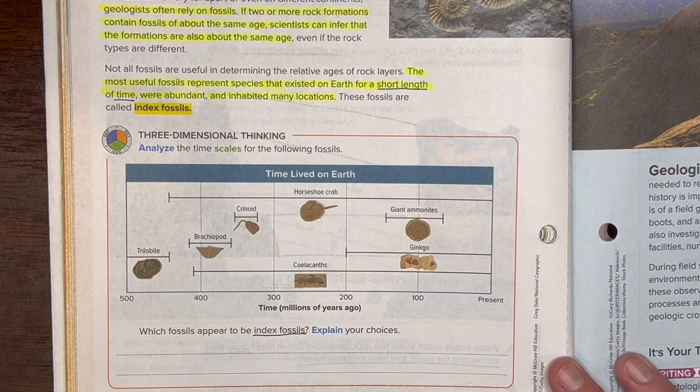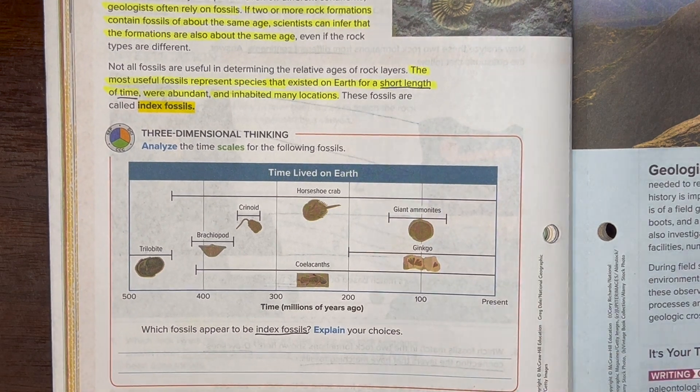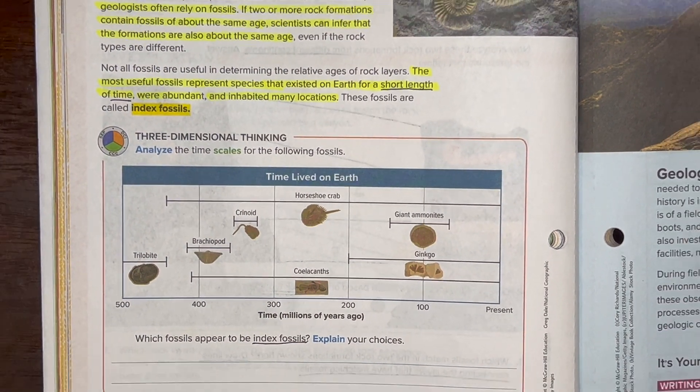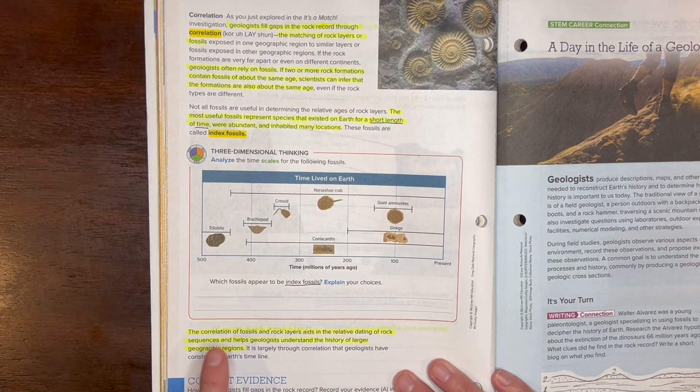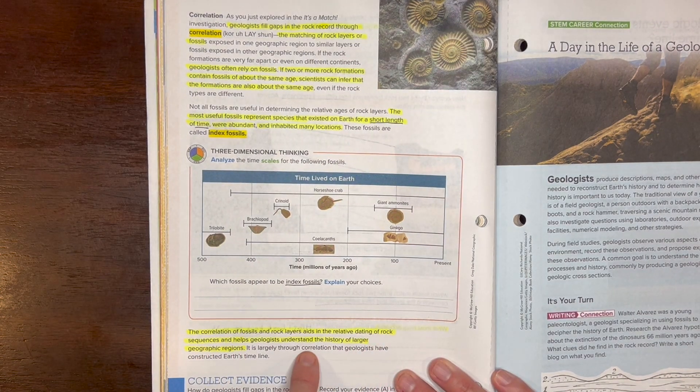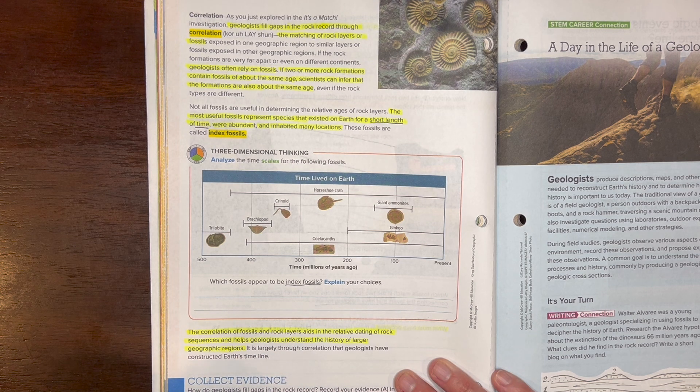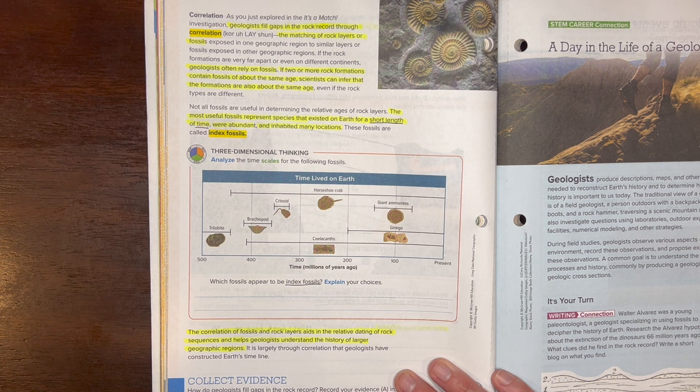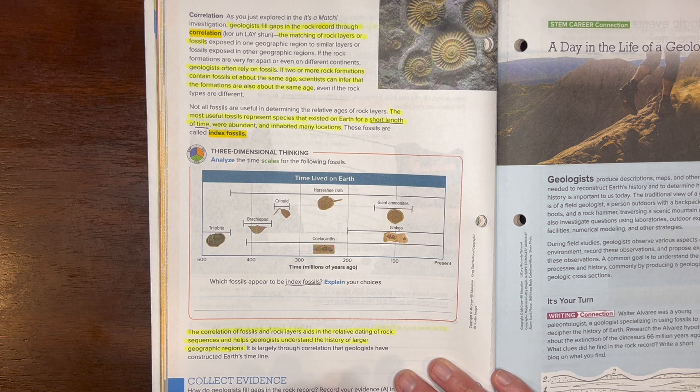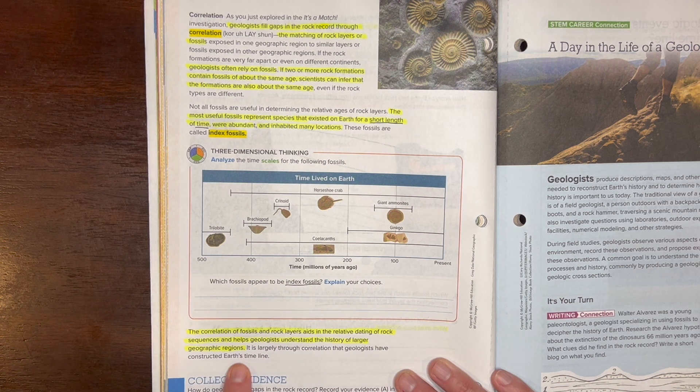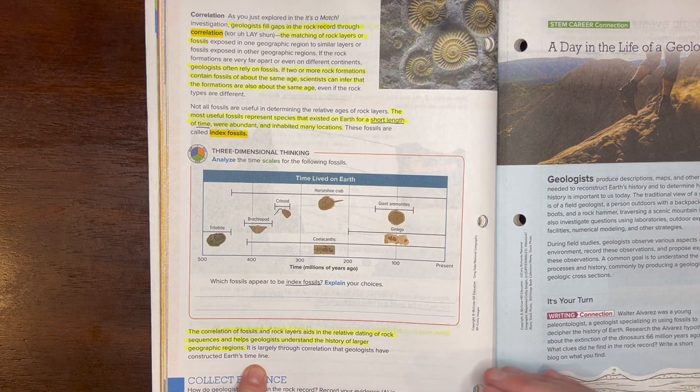Our last section at the bottom here is talking about correlation. I really want you guys to highlight this last statement here about the correlation of fossils and rock layers. This really helps in relative dating of rock sequences. These geologists are able to understand the history of lots of geographic regions throughout the world and really give Earth's timeline some really specific ordering.